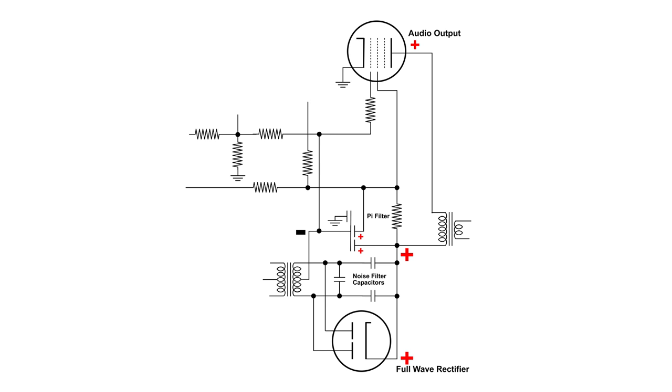Let's take a look at that audio output tube. You'll notice that the cathode is grounded to the chassis. Let's see if we can figure out how the electrons get there.